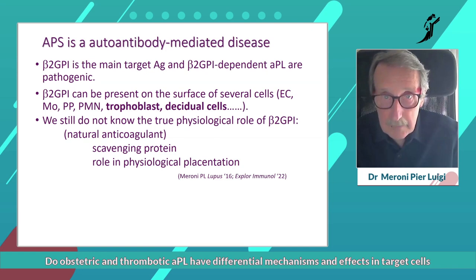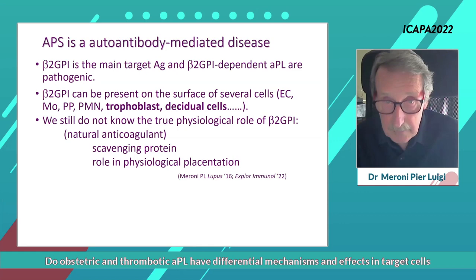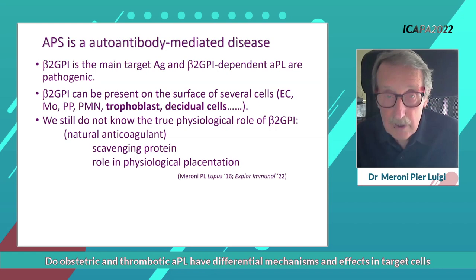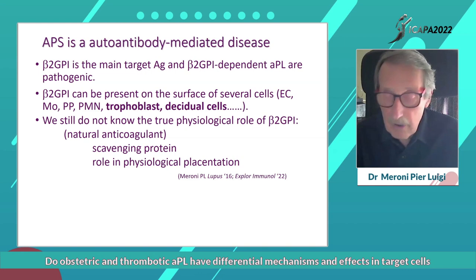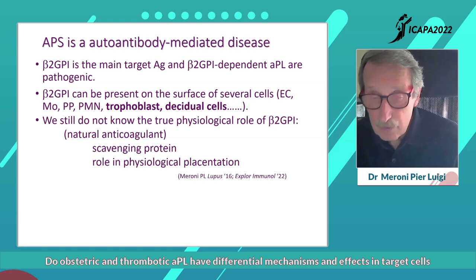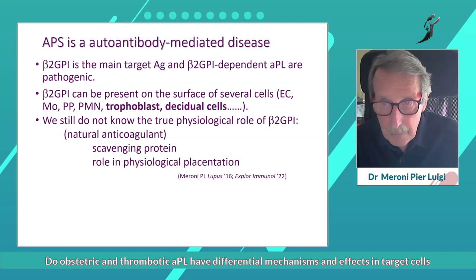Beta-2-glycoprotein-1 is the main target antigen and beta-2-glycoprotein-1-dependent antiphospholipid antibodies are the main pathogenic antibodies. Beta-2-glycoprotein-1 can be present on the surface of different cells, including endothelial cells or other cells involved in the coagulation cascade, but this is also true for cells that are key players in placentation, such as trophoblasts and the decidual cells.